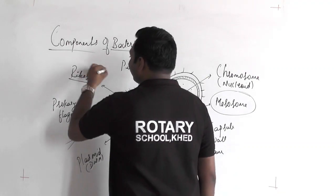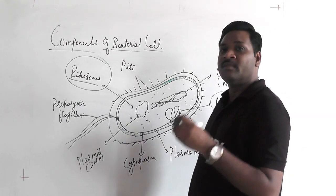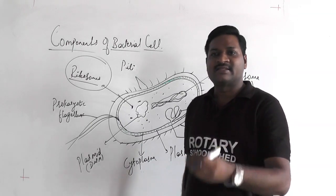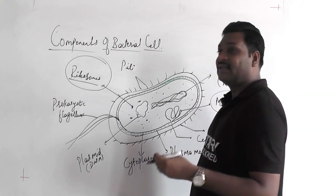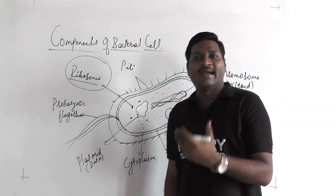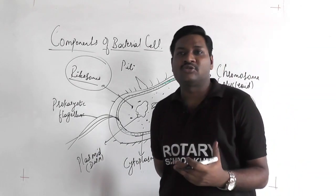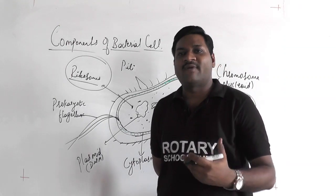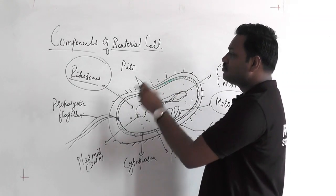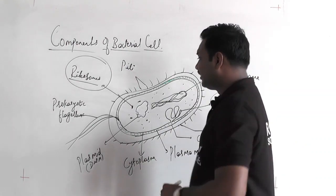They also have ribosomes, which are referred to as protein factories, responsible for protein synthesis. In the eukaryotic cell, ribosomes are synthesized within the nucleolus and then attached either to the endoplasmic reticulum or freely formed within the cytoplasm. If they remain attached to the endoplasmic reticulum, that is called the rough endoplasmic reticulum. In bacteria, ribosomes simply help in protein synthesis.